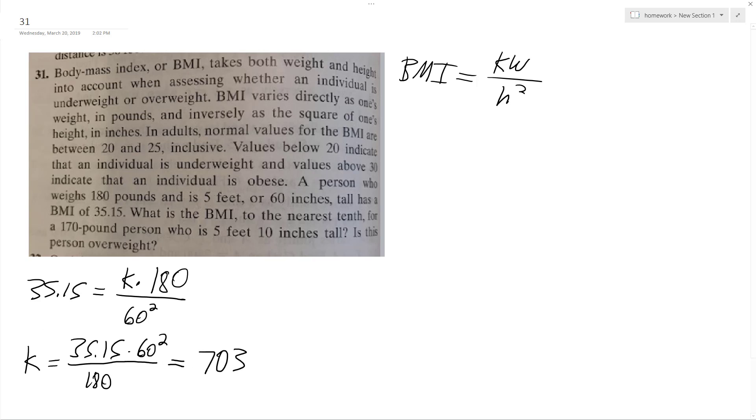So the good news about that is now we can use this to solve what our BMI is for someone who's 5 feet 10 inches tall, which is 70 inches.